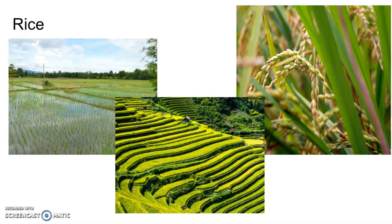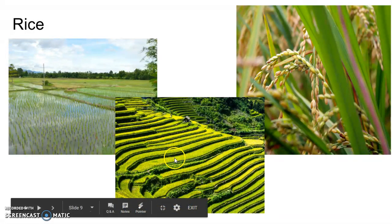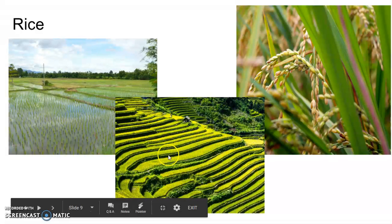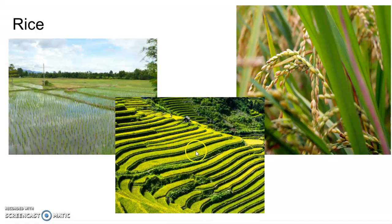Let's look at what rice looks like. This is the sawa, the flooded field — you can see the seedlings in there. The seedlings are transferred by hand. This is terrace farming, probably in a place like Indonesia or Bali, where they carve flat surfaces up a hillside to farm on — that's called a terrace. This is what rice looks like when it's almost ready to harvest. The rice is inside the stalk; they crack it open and let the chaff blow away in the breeze. Very labor intensive.